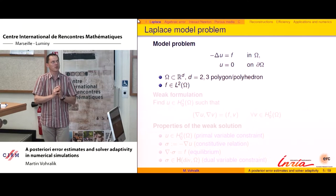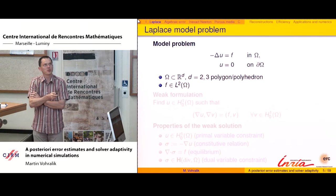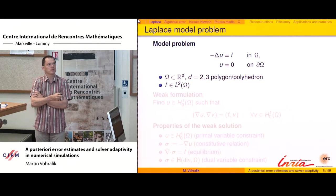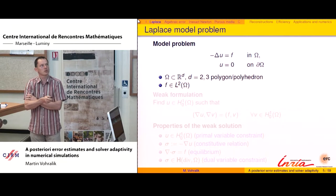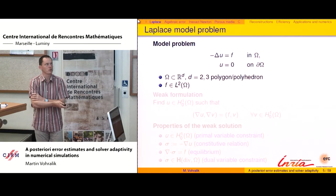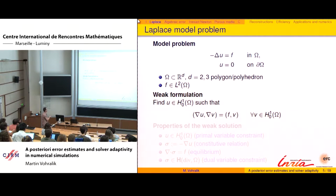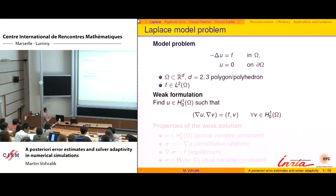My linear model toy problem is the Laplace equation: minus Laplacian of U equals F, with U zero on the boundary, in two or three space dimensions. Omega is a polygon or polyhedron for simplicity, and the source term is an L2 function. The weak solution is a function sitting in the space H^1_0, satisfying the integral equality for all test functions — giving a proper setting with existence and uniqueness.